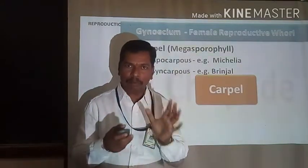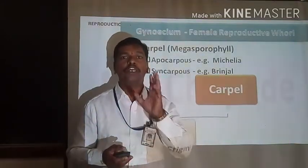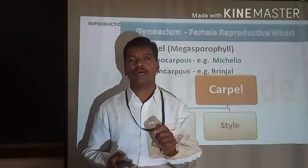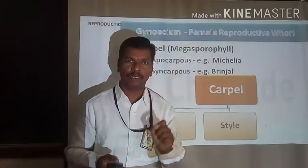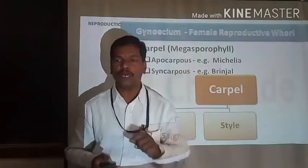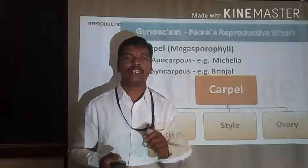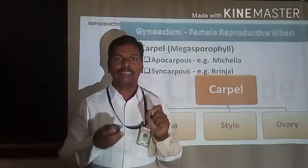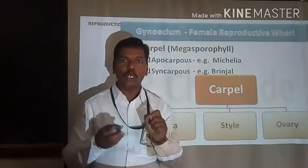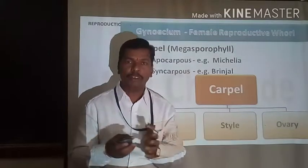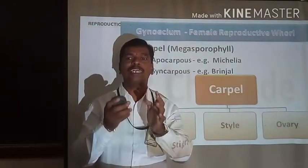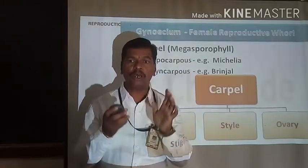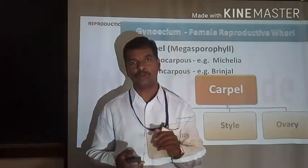When we observe the exact typical structure of the carpels, the carpel has three different parts. The first part is the stigma, the second part is the style, and the last and very important part is the ovary. In this way, the stigma, style, and ovary come together and give rise to the specific structure of the flower called the carpel, which is the individual member of the female reproductive whorl — that is, the gynoecium.